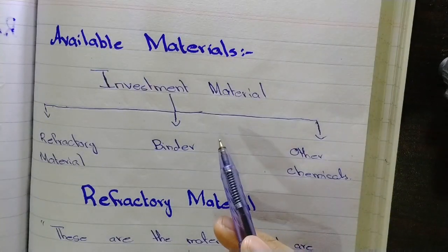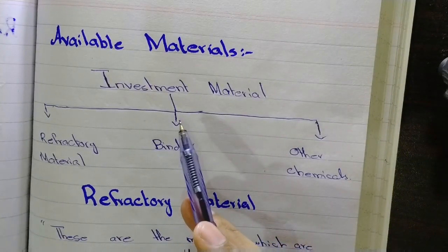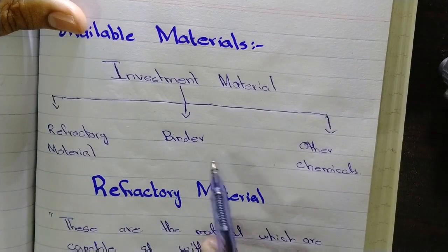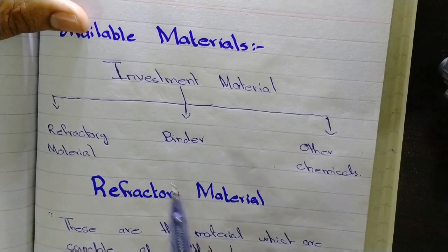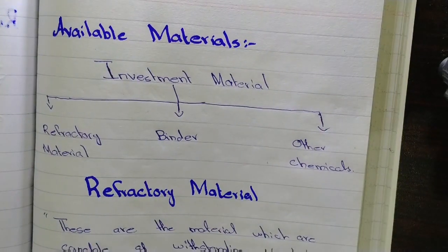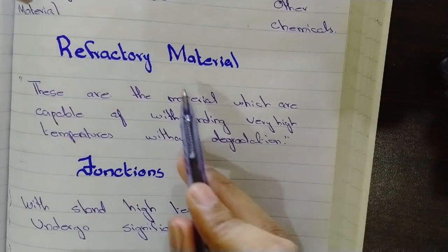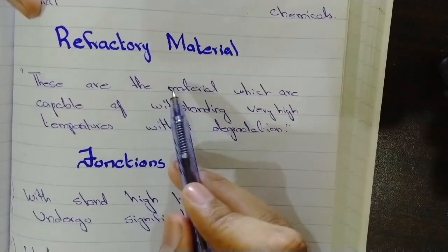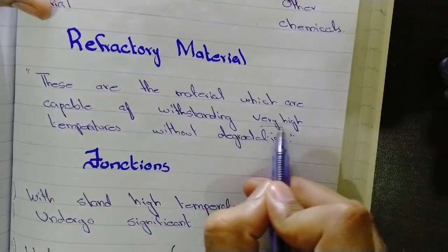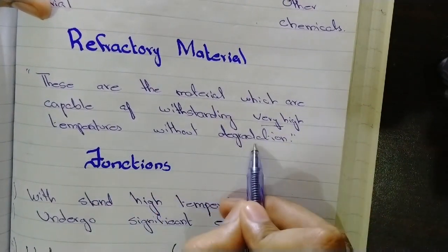Now the available materials. Basically, investment material is a mixture of refractory material, binder, and other chemicals. We will study refractory material and binder in detail. What is refractory material? Refractory materials are materials which are capable of withstanding very high temperatures without degradation.